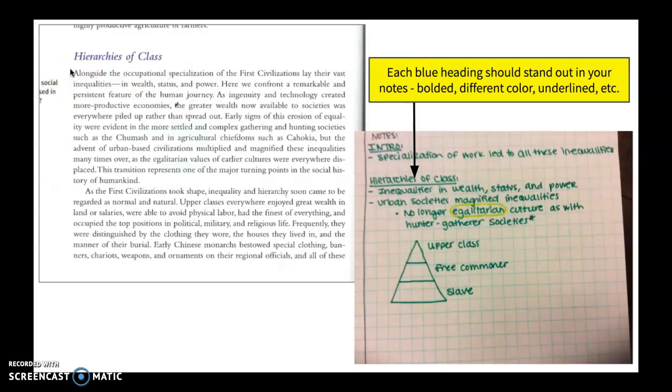As I'm reading through this, that first sentence usually gives you a good idea of what that paragraph is going to be about, much like when we write a CEA paragraph. And so this says alongside the occupational specialization of the first civilizations lay their vast inequalities in wealth, status, and power. And so this is really the big idea of this paragraph.